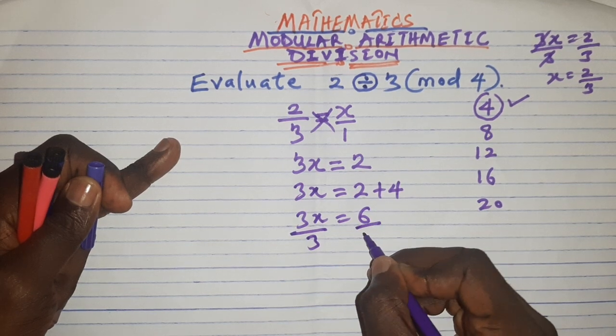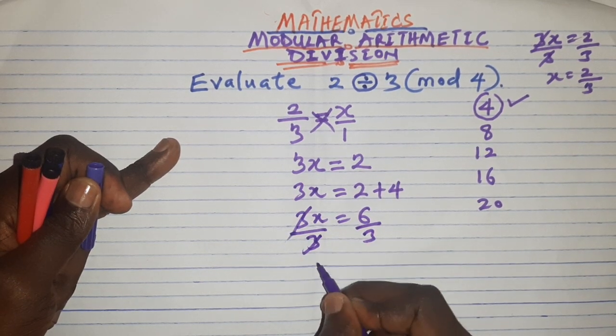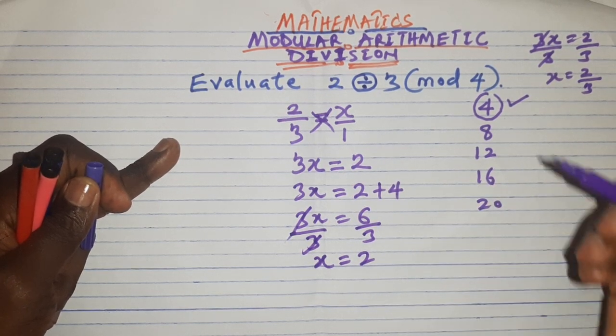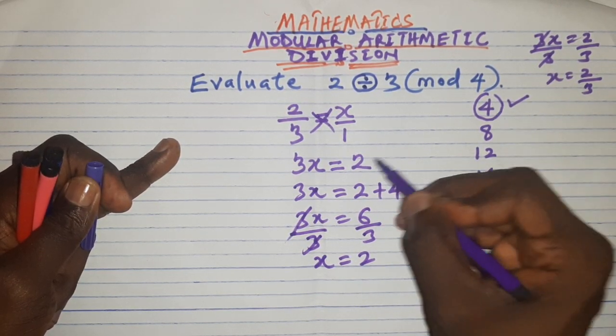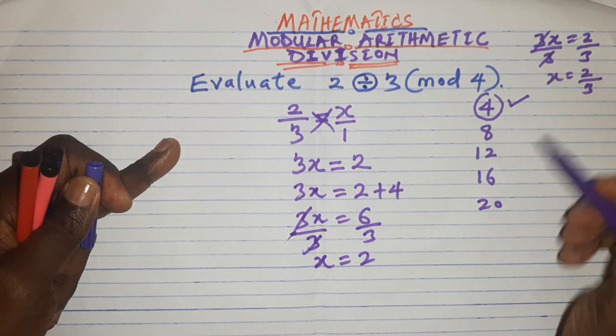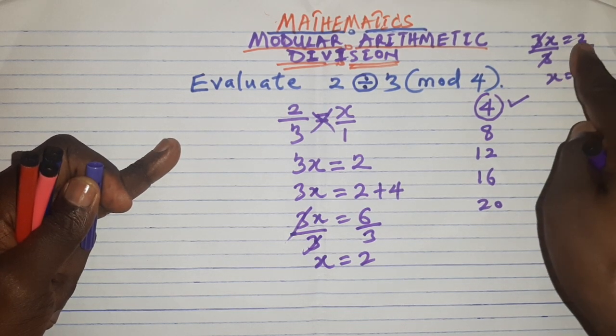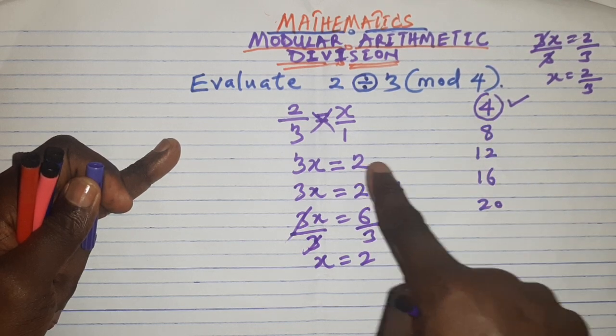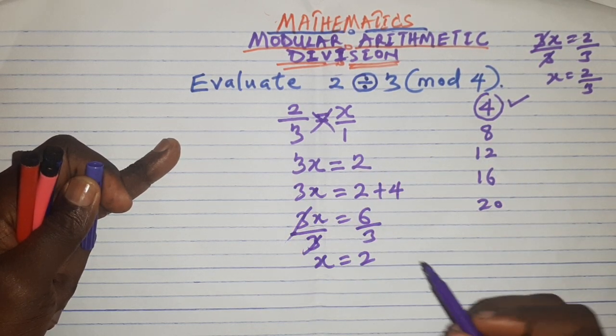When I divide both sides by 3, 3 cancels 3, then x now equals 2. You see, 3 can now divide 6, but I made it possible to get 6 by adding 4 to this 2. You have to be very smart. Here I couldn't divide this 2 by the 3, that was why I added one of the multiples of this 4 to 2 to make it divisible by 3.